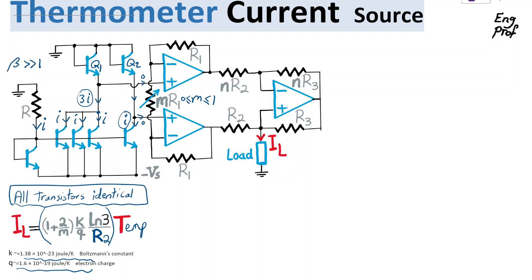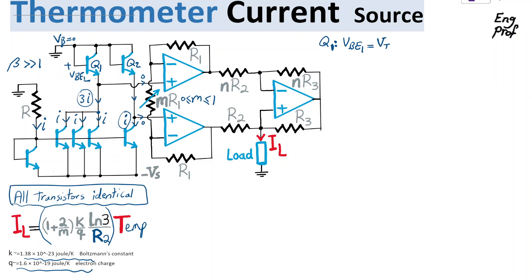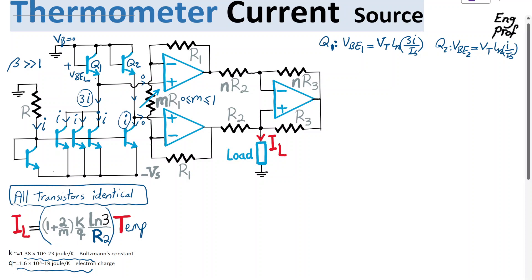For Q1, I can use the BJT voltage-current relation: VBE1 equals VT times ln(3I / IS). Knowing that V_base is 0 for the top transistors, VBE1 equals thermal voltage VT times ln(3I / IS). For transistor Q2, VBE2 equals VT times ln(I / IS). The thermal voltage VT is simply Boltzmann's constant K times the temperature T observed by the junction of the transistor in Kelvin, divided by Q the electron charge.